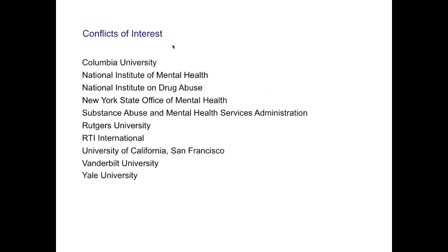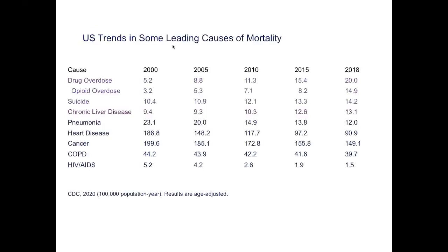Here's a list of potential conflicts of interest — organizations from which I've received income in the last few years. One reason this topic is so important is that over the past couple of decades, we've seen rising rates of suicide, drug overdose, and chronic liver disease deaths in the United States. These trends stand in sharp contrast to the impressive declines achieved in other leading causes of death such as pneumonia, heart disease, cancer, and HIV-AIDS.